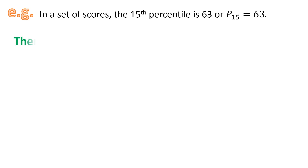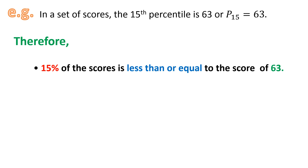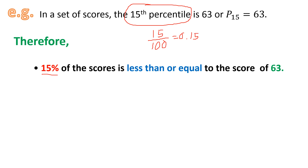So what does this imply? We may conclude from this statement that 15% of the scores is less than or equal to the score of 63. We say 15% because we are talking about the 15th percentile. To have this in percent, it is only a matter of dividing 15 by 100, since it is under percentile. So 15 divided by 100 is 0.15. Since we need to transform this into percent, we multiply by 100, and this gives us 15.